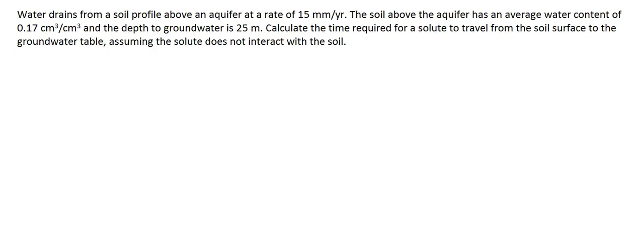In this video, I'm going to work an example problem related to solute transport. The problem statement says that water drains from a soil profile above an aquifer at a rate of 15 millimeters per year. The soil above the aquifer has an average volumetric water content of 0.17 centimeters cubed per centimeters cubed, and the depth to groundwater is 25 meters. Calculate the time required for a solute to travel from the soil surface to the groundwater table, assuming the solute does not interact with the soil.